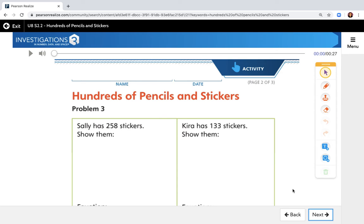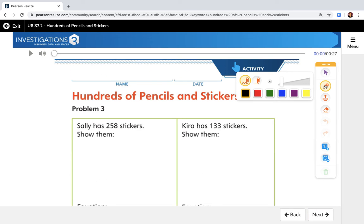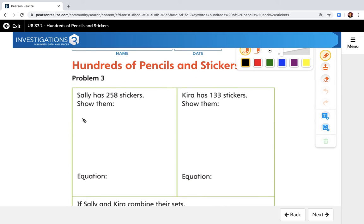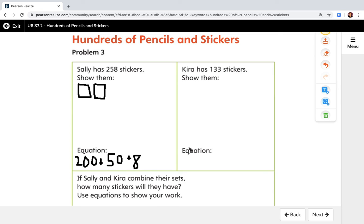And then the same thing for the next page, combining stickers. We still want you to break apart the numbers to show the equation. So for example, I'm going to draw 258 stickers. Like 200. You know how to do this. So I'm not going to keep showing you. And then for the equation, 200 plus 50 plus 8. You catch my drift? You remember how to do this, right? All right, mathematicians. Off you go.